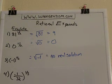It's no real solution because there are no two real numbers that we can multiply together to give us negative 1.